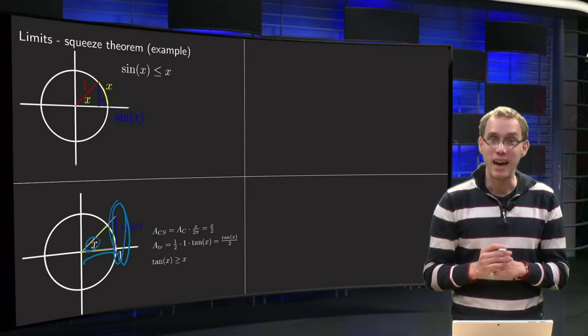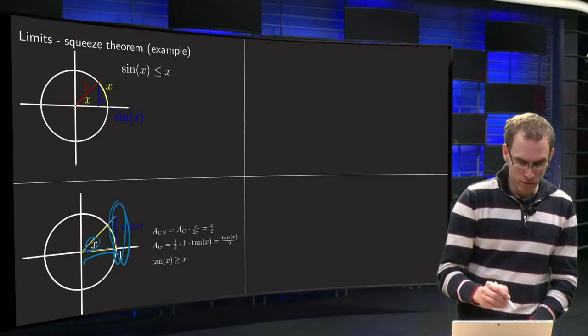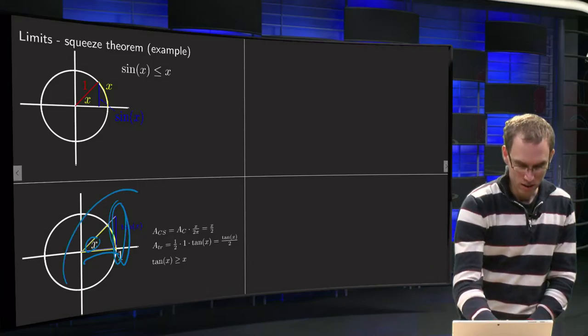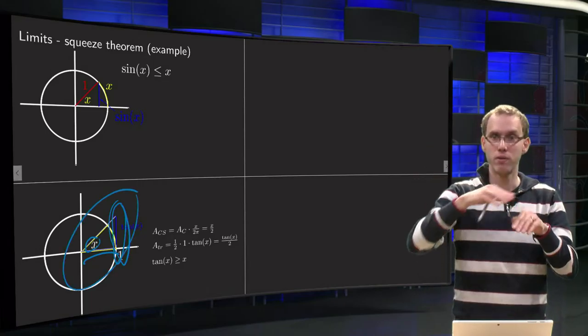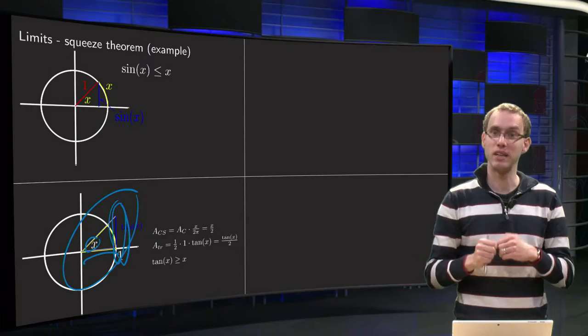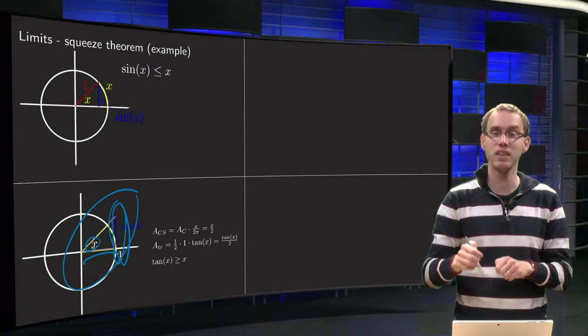For that we need to look at areas. Well, first of all we have the area of the triangle with 1 and the tangent of x. So that area of this triangle equals 1 half times 1 times the tangent of x.